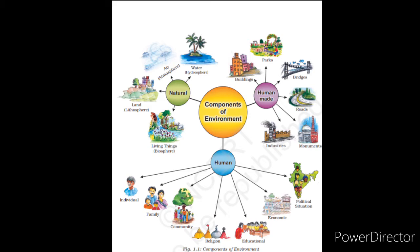First is lithosphere. Lithosphere is also known as the sphere of land. Second is atmosphere. All the layers of air present on our earth's surface are known as atmosphere, or we can also say a blanket of air is known as atmosphere, which surrounds our earth.